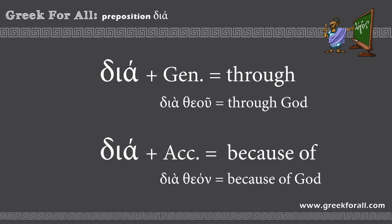For example, in the construction with 'through,' whenever you encounter this preposition you immediately check the ending of the following word. If it has a genitive ending, dia plus genitive means 'through God.' And in the construction dia theon, we see an accusative ending, so dia plus accusative means 'because of God.'